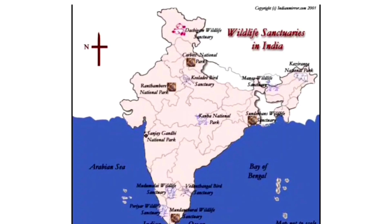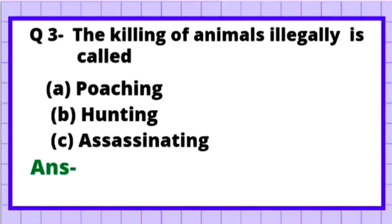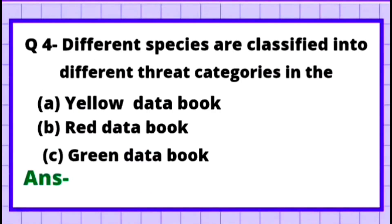Question 3: The killing of animals illegally is called — Option A: Poaching, Option B: Hunting, Option C: Assassinating. Animals that are illegally killed — this act is called poaching. So the correct answer is Option A.